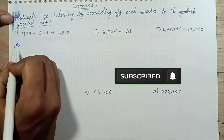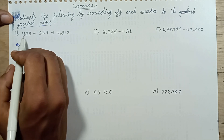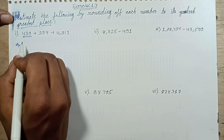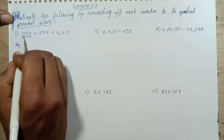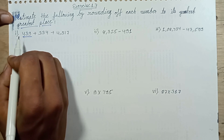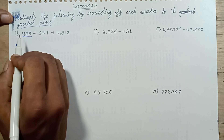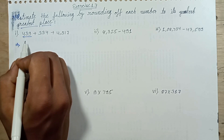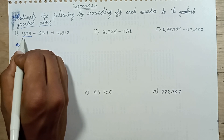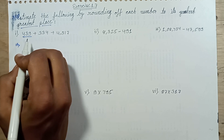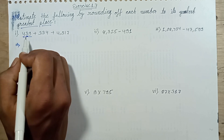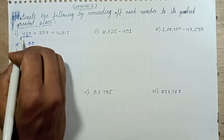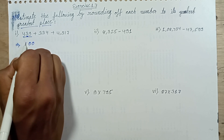First of all, question number 1. The greatest place in this factor is the hundreds place — 4 is in the hundreds place. Hundreds place digit is 4 and tens place digit is 3. Since 3 is less than 5, 3 is replaced with 0 and 9 is replaced with 0.